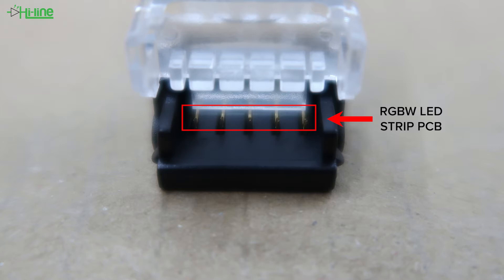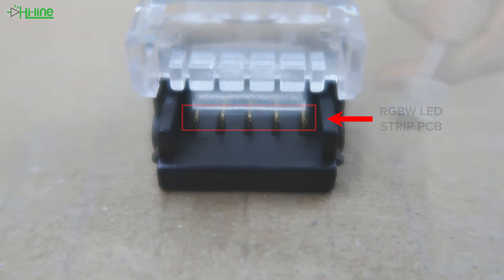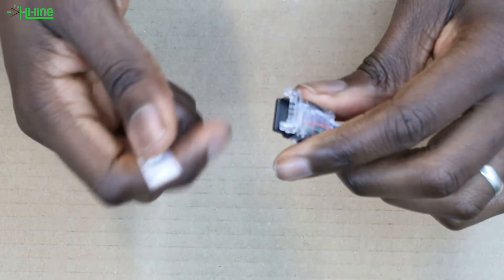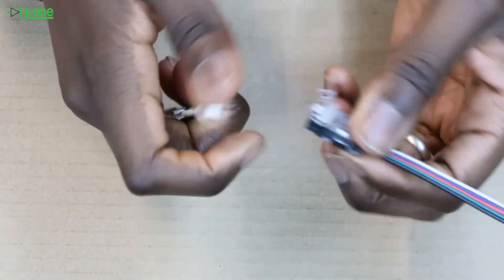After that, you want to place your LED strip on the correct side of the connector. So you grab your LED strip and you place it right at the back of the connector.